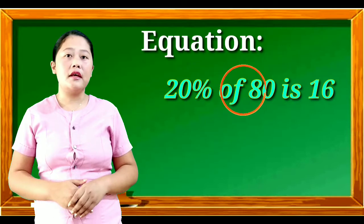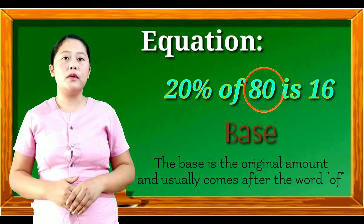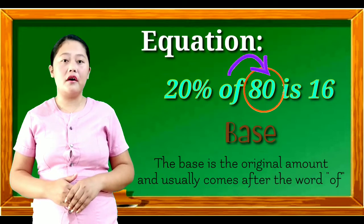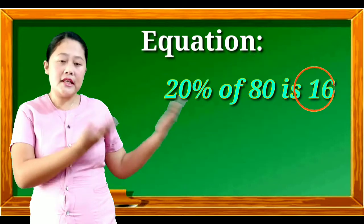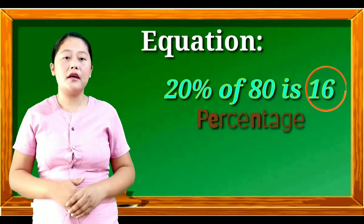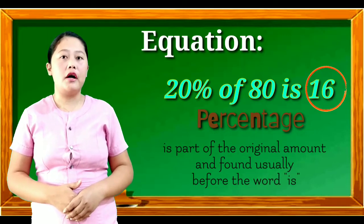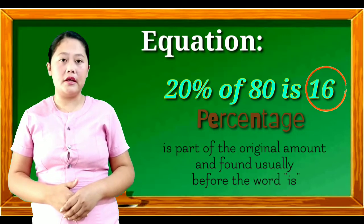While 80 is the base. The base is the original amount and usually comes after the word 'of'. 16 is the percentage. Why? Because percentage is part of the original amount and found usually before the word 'is'.